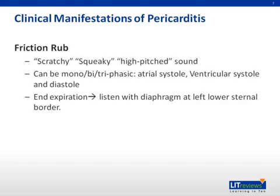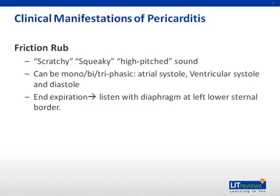When the inflamed layers — the visceral and parietal pericardium — rub against one another, they can actually make noise, which we call a friction rub. This is an odd sound that is quite variable in presentation; some describe it as scratchy, squeaky, or even a high-pitched sound. It can be mono-, bi-, or even triphasic, with each phase corresponding to phases of the cardiac cycle: atrial systole, ventricular systole, and ventricular diastole. Friction rubs are best heard with end expiration, listening with the diaphragm of your stethoscope at the left lower sternal border.